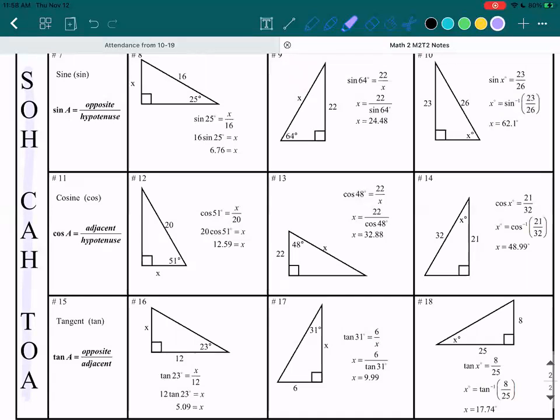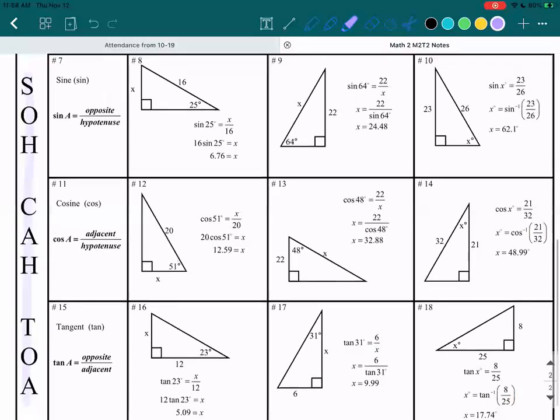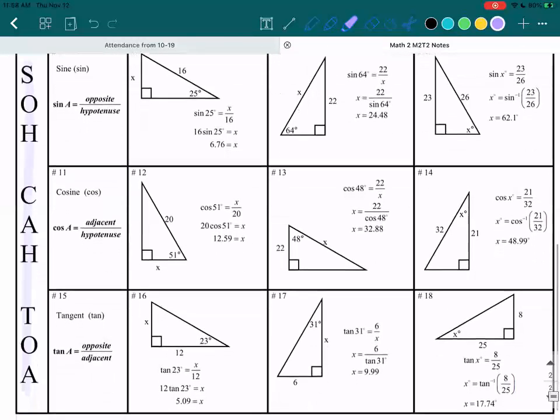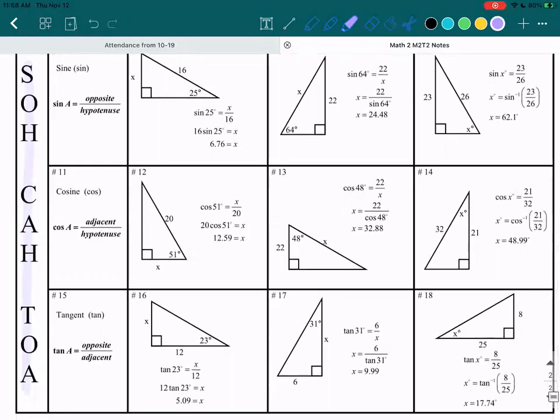That is the acronym of SOHCAHTOA. So SOHCAHTOA helps us remember what sine, cosine, and tangent are. You're probably wondering, what is sine, cosine, and tangent? These are trigonometric functions. You don't have to remember that word right now, but essentially they are just proportions or ratios of either opposite over hypotenuse, as you can see over here, or adjacent over hypotenuse for this one, or opposite over adjacent. So there's just a name for it.